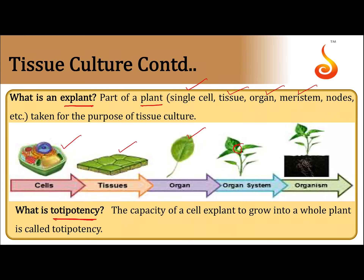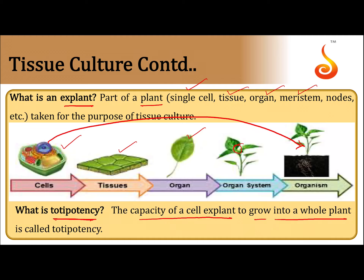What is totipotency? A single cell producing a whole plant is called totipotency. The capacity of a cell or explant to grow into a whole plant is called totipotency.